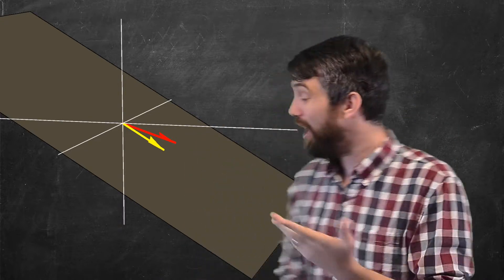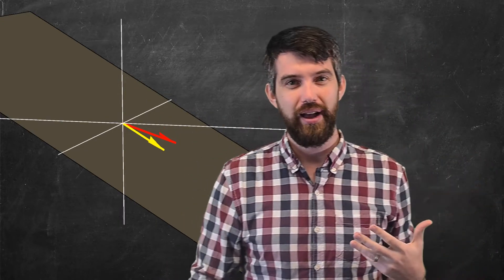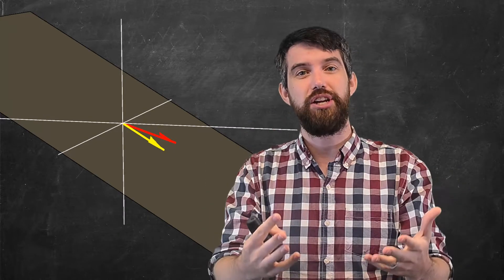In particular, if I choose some subspace like this plane here, how do I define the dimension of that?